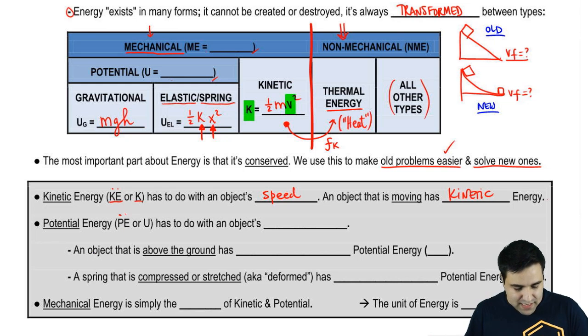And you should be able to tell which types of energy an object has. Potential energy is represented by PE, but the most usual one is actually U. So potential energy is U. And it has to do with an object's position.